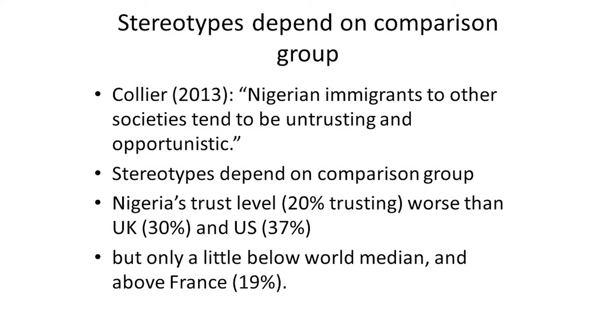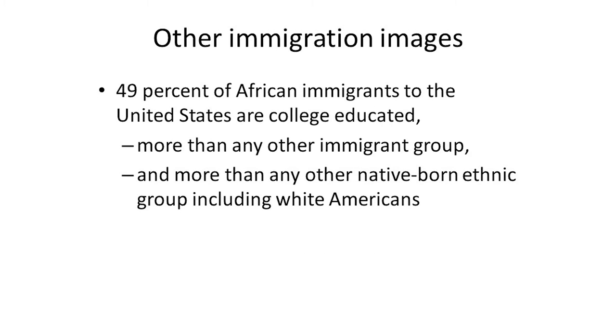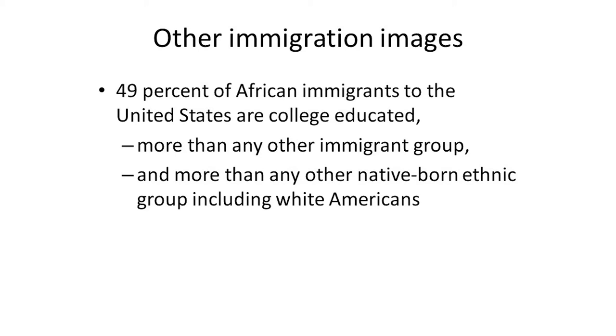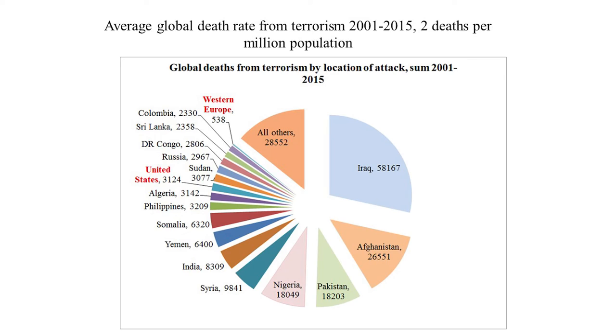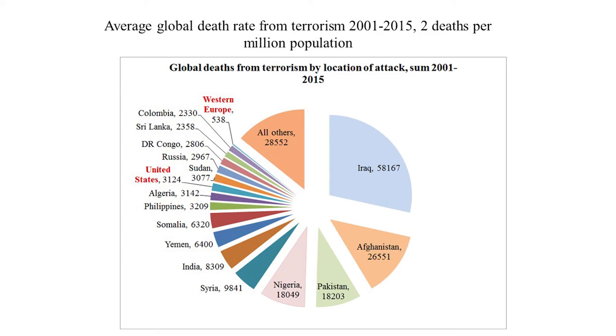Here's a more positive — actually not a stereotype but real data: 49% of African immigrants to the US are college-educated, which is higher than any other ethnic group in the whole sample. Terrorism is of course an enormously politically explosive issue, but the actual death count is a lot less than you think. For the world as a whole, it's two deaths per million population. The vast majority of terrorist deaths are not happening in Western Europe or the US. We should be showing a lot more sympathy to other places that are suffering much worse terrorism problems.